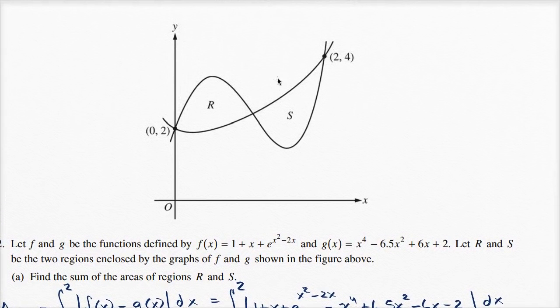Alright, so region S, we see it right over here. In the last part, we already said that this function is f and this function is g. You could try out some values and think about how they behave, or you could get a sense that a fourth degree polynomial's gonna have these ups and downs like that,